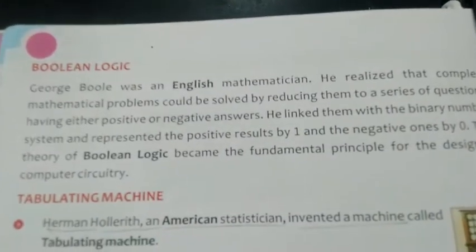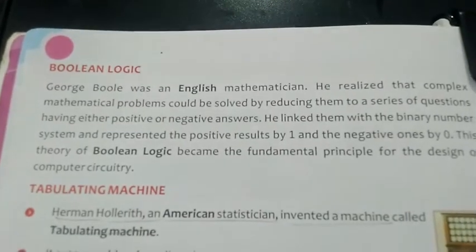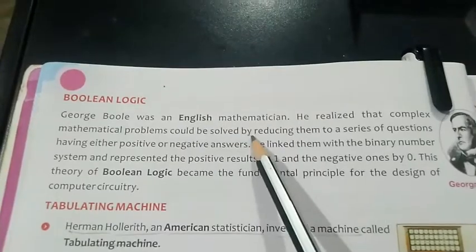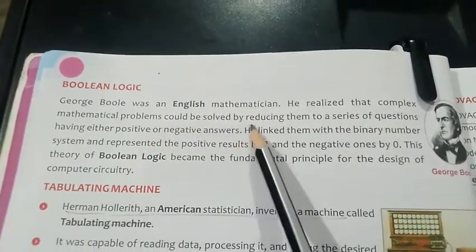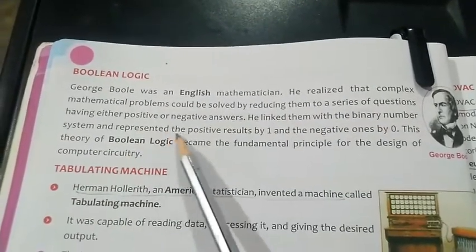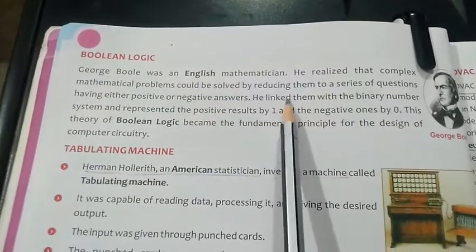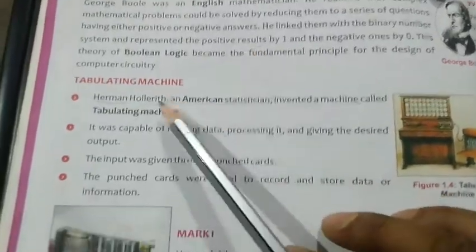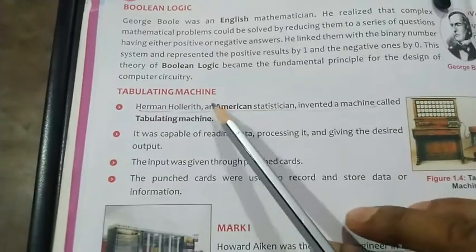Next is Boolean logic, which in higher classes is taught as Boolean algebra. George Boole was an English mathematician who realized that complex mathematical problems could be solved by reducing them to a series of questions having either positive or negative answers. He was the first person to develop the concept of ones and zeros.